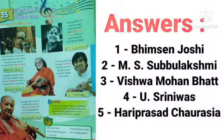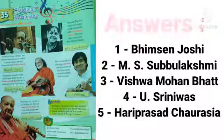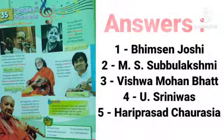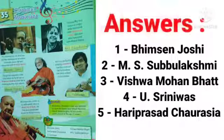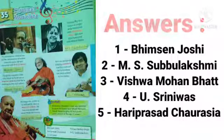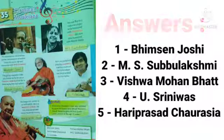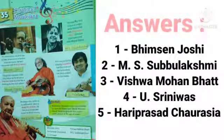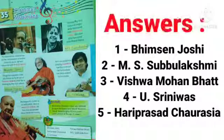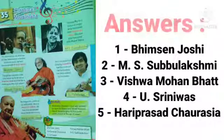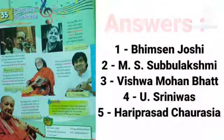Now move to Chapter 35: Classical Musicians. Identify these great Indian musicians. The first answer is Bhimsen Joshi, the second is M.S. Subbulakshmi, the third is Vishwa Mohan Bhatt, the fourth is Ustad Rashid Khan, and the fifth is Hari Prasad Chaurasia.